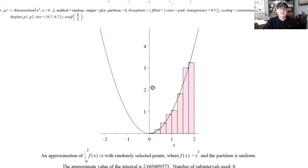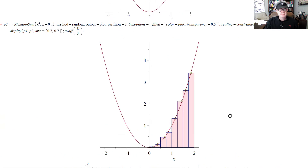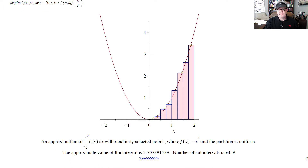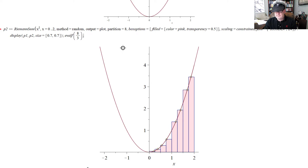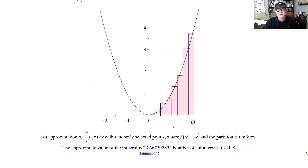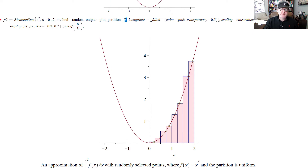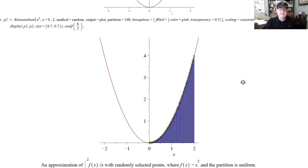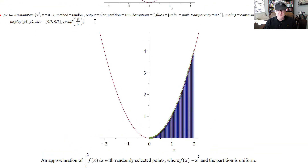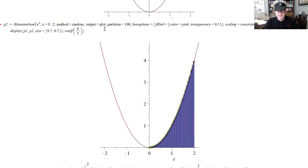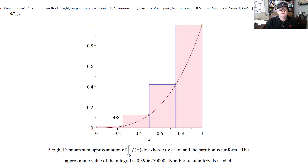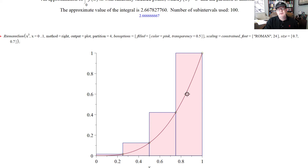There's going to be a lot of fluctuation in the values with random points. But if you change the number of partitions to, say, 100, you have to be pretty close. The more partitions, the closer you'll be — the bigger n is, you're always guaranteed to be close. A kind of worst-case scenario was that right-hand sum. Here's x³ with 4 rectangles and right endpoints — midpoints are always a good choice.